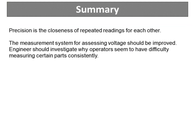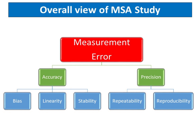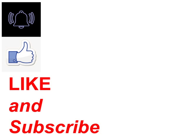In summary, precision is the closeness of repeated readings for each other. The measurement system for assessing voltage should be improved. Engineers should investigate why operators seem to have difficulty measuring certain parts consistently. MSA assesses whether the gauge is capable in terms of precision and accuracy. The accuracy of a measurement system has three components: bias, linearity, and stability. Precision, or measurement variation, has two components: repeatability and reproducibility. Thanks for watching. Remember to subscribe to my channel. Bye, see you next time.